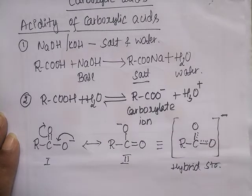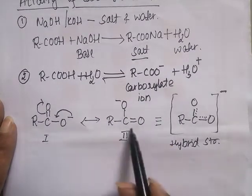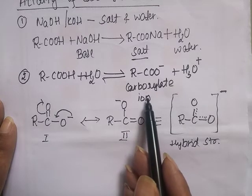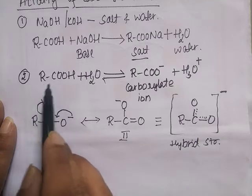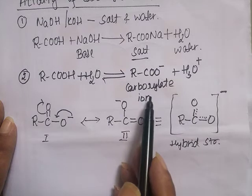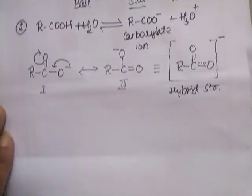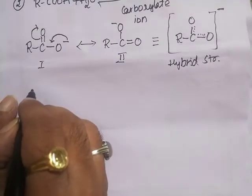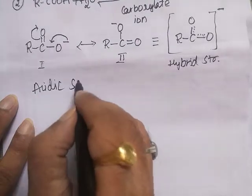The carboxylate ion is capable of forming resonance structures, so it is more stable than the carboxylic acid. Therefore, carboxylic acid readily loses the H⁺ ion to form the carboxylate ion. Any substance which produces H⁺ ions in solution is called an acid. Next, let us continue our discussion on the acidic strength of carboxylic acids.